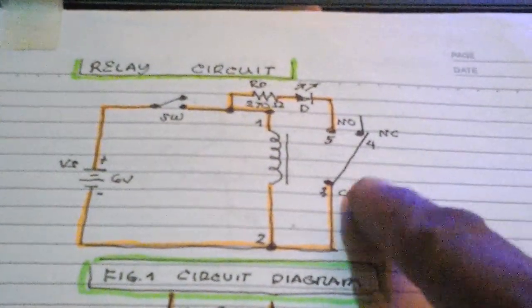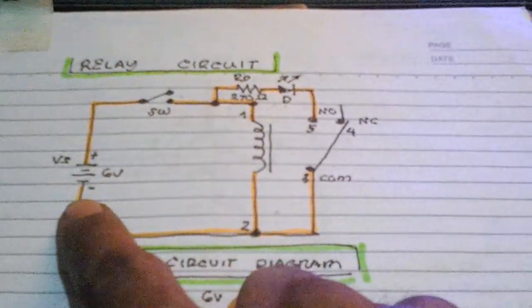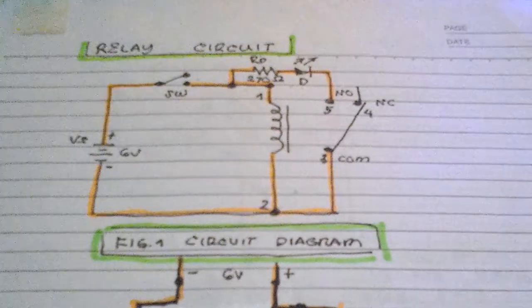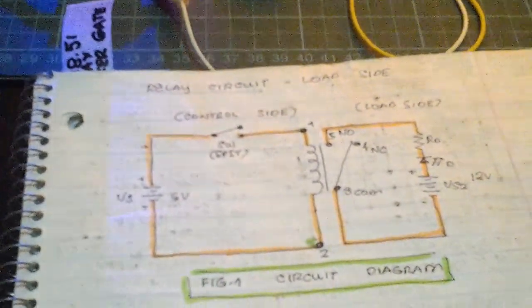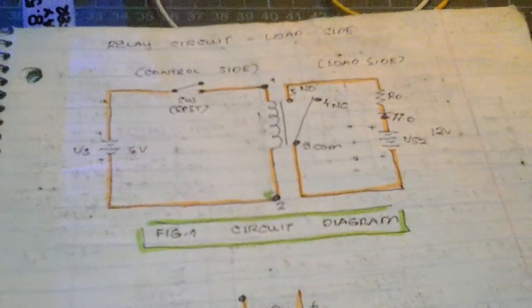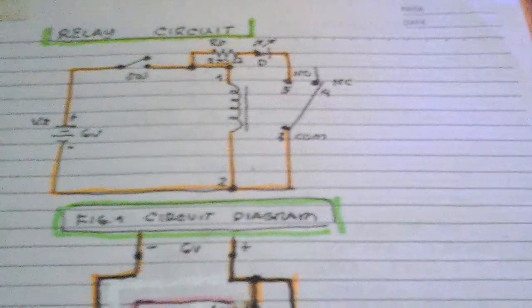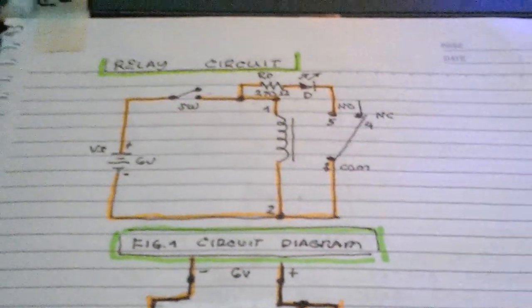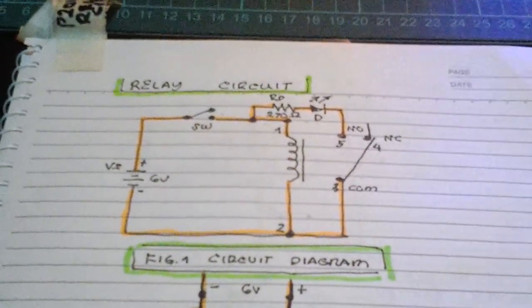This is the load side. Unlike the other circuit where there is no separate load side — it's just connected to the ground — because we have only one power supply. So: two relay circuits — one has two separate power supplies and the other has only one power supply. That is our relay circuit.